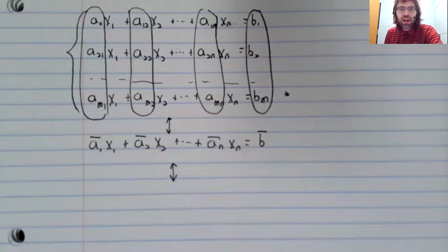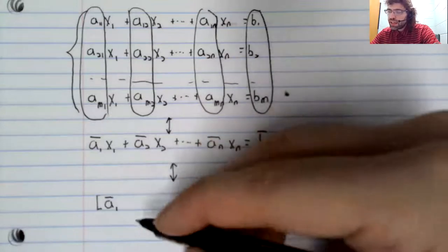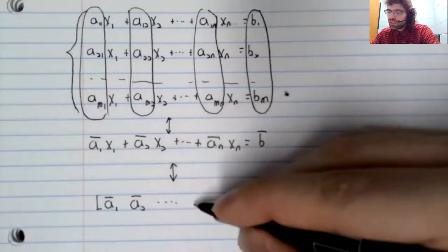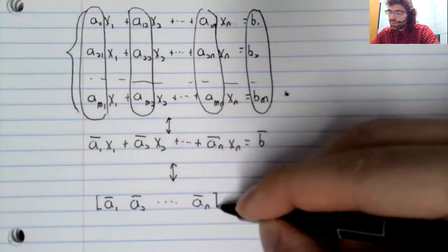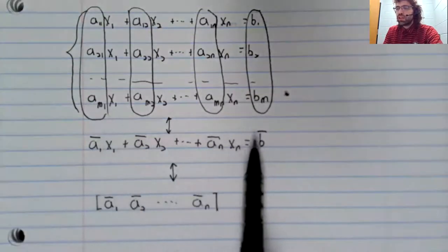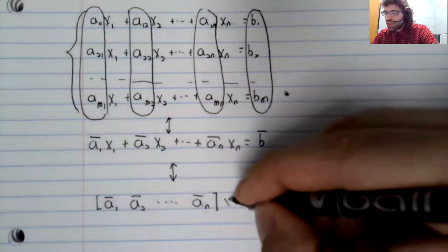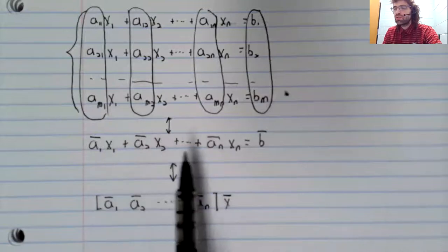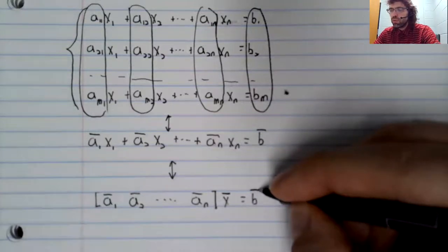If you create a matrix that has these a sub i as its columns, then this equality is the same as saying that this matrix times an unknown vector x1, x2, up to xn equals b.